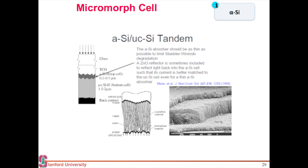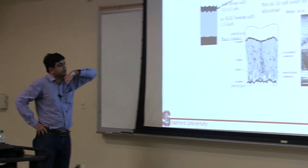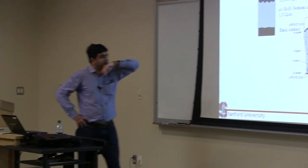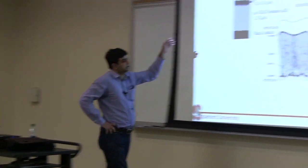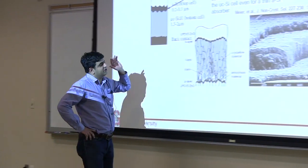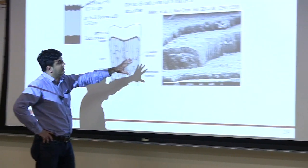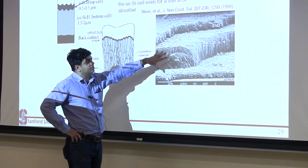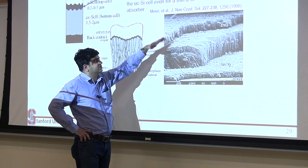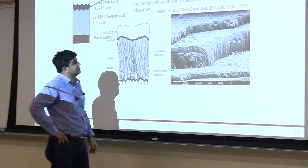The top amorphous layer is grown at a lower temperature, so it stays amorphous. When you take a SEM or TEM, these amorphous materials don't look very pretty — they look quite disordered.